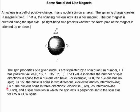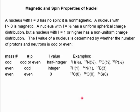If i equals one, the nucleus spins in three directions: clockwise, counterclockwise, and a spin direction in which the spin axis is perpendicular to the spin axis of the clockwise and counterclockwise spins. The spin properties of a nucleus depend on the oddness or evenness of the number of protons and neutrons in the nucleus.